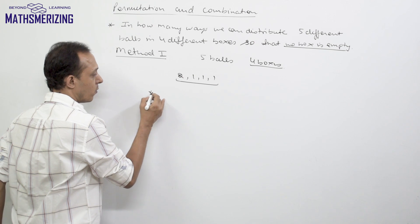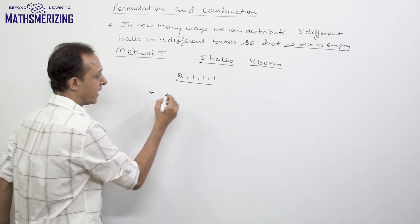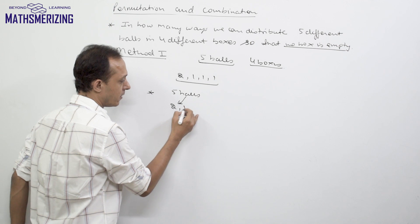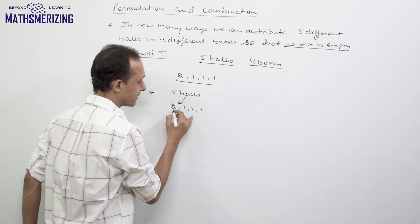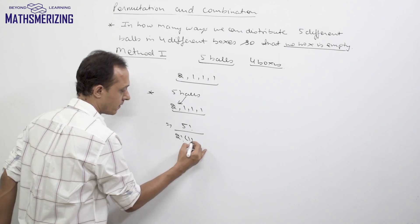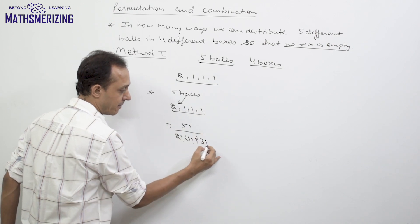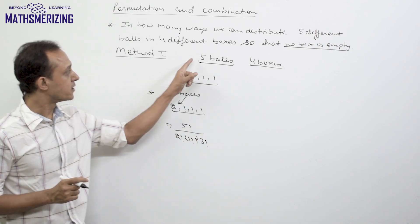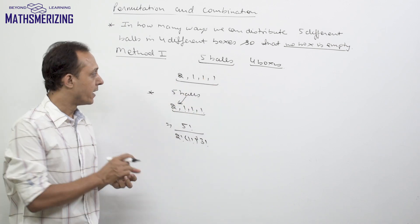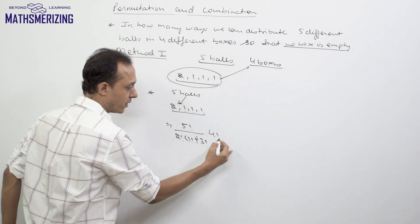First we'll go for unnamed distribution. We distribute these 5 balls in groups of 2, 1, 1, and 1, which can be done in 5! / (2! × 1!³) and then divide by 3! because the group sizes of 1 repeat. Now we have distributed the 5 balls into 4 groups. We can then arrange these 4 groups into the 4 boxes in 4! ways.